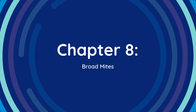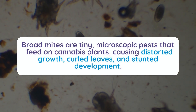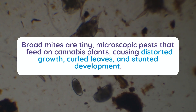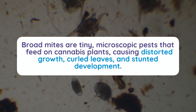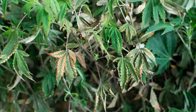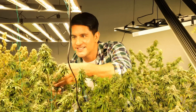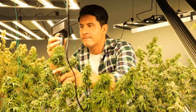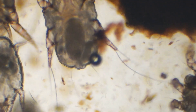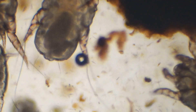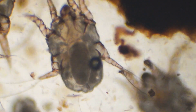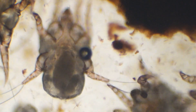Chapter 8: Broad Mites. Broad mites are tiny, microscopic pests that feed on cannabis plants, causing distorted growth, curled leaves, and stunted development. They are challenging to detect due to their small size and can cause significant damage before they are noticed. Identifying broad mites requires close inspection of the plant's new growth. Look for symptoms such as twisted, brittle leaves and russet-colored spots. Using a magnifying glass or microscope can help spot the mites themselves, which appear as tiny, translucent creatures.